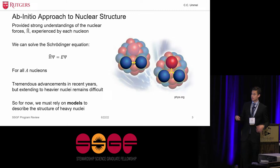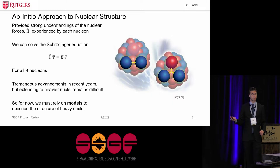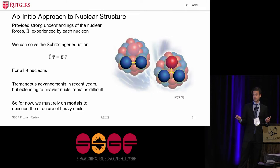And so the challenge I'd like to pose is, is it theoretically possible to describe the structure using some kind of theoretical formalism? The most thorough way to do this in principle would be to take an ab initio approach, which is provided that we have strong understandings of the nuclear forces, which I'll denote by the Hamiltonian there, that are experienced by each nucleon in our A nucleon system, we can in principle solve the Schrodinger equation for all of those A nucleons. And I'll actually highlight that there have been really tremendous advancements in this in recent years in the area of chiral effective field theory. But nonetheless, expanding this to heavier nuclei is really, really difficult.